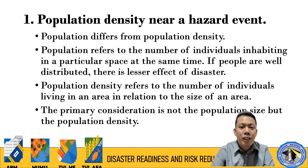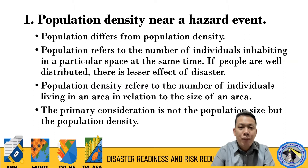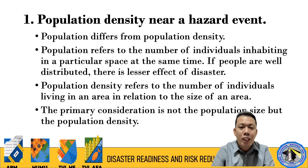The first factor is population density near a hazard event. Let us clarify the terminologies — population versus population density. Population refers to the number of individuals inhabiting a particular space at the same time. If people are well-distributed, there is a lesser effect of disaster. For example, what is the population of your barangay? Let's say there are around 50,000 or 35,000 individuals — that is the population.